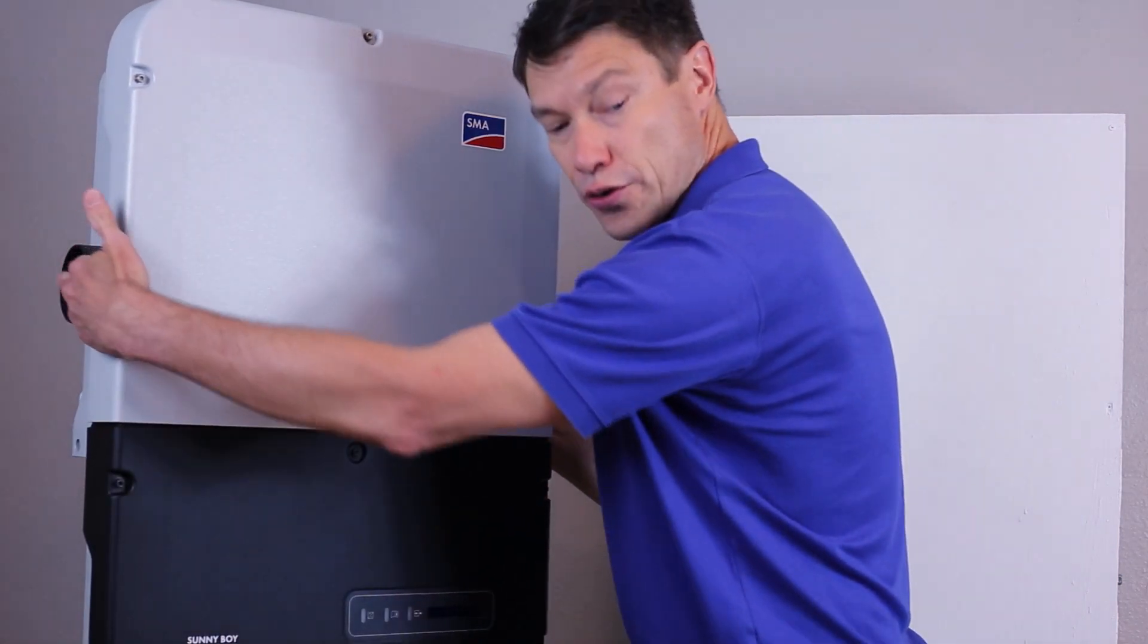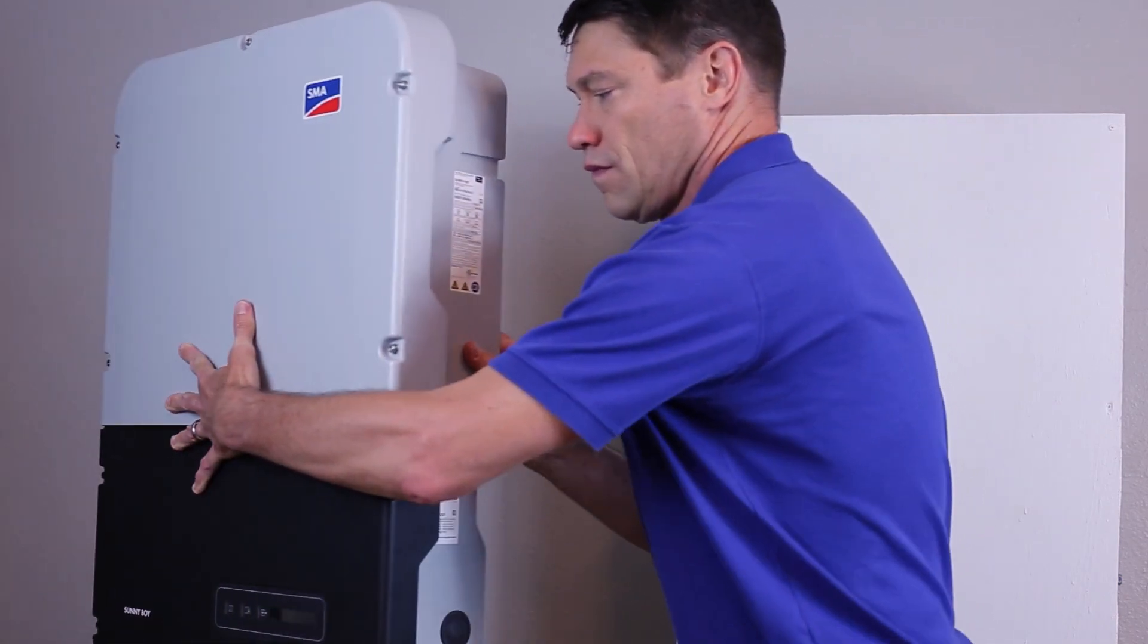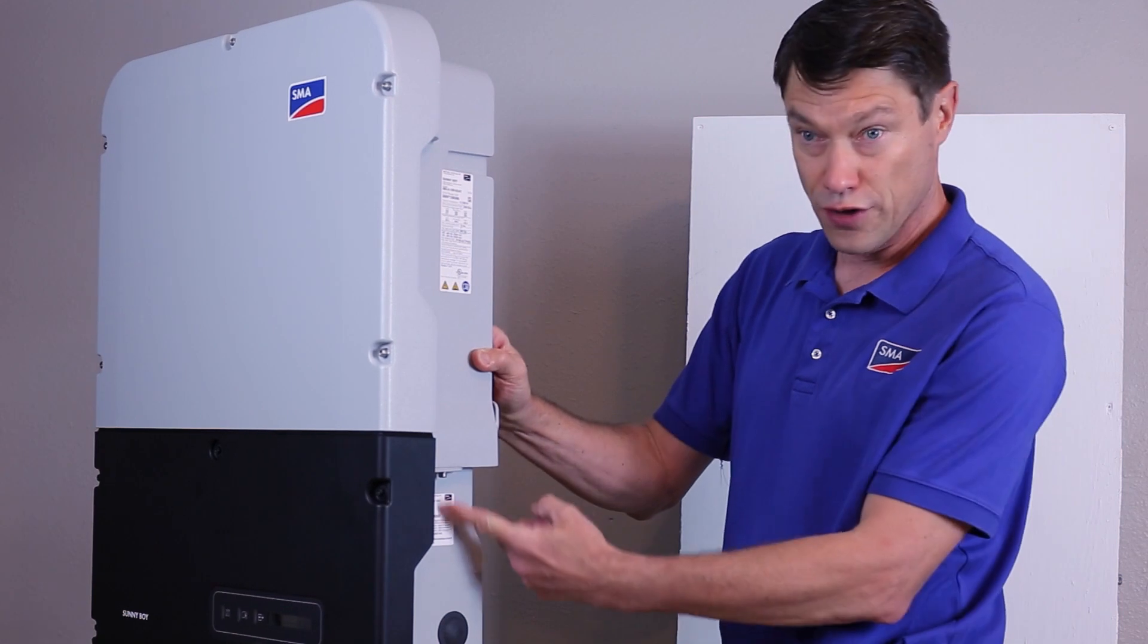On the left side of the inverter, you will see the load break rated DC disconnect. And on the right side of the inverter, in the lower section,